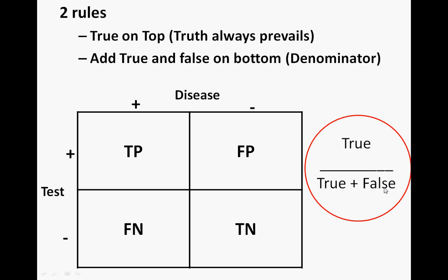In the denominator, you're going to add the true and the false values. The true positive and true negative are always going to be in the numerator. You're never going to divide by a false positive or a false negative — those will always be part of the denominator along with their paired true value.